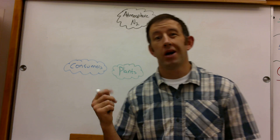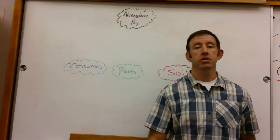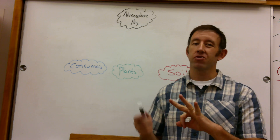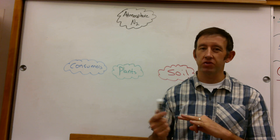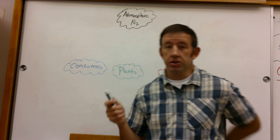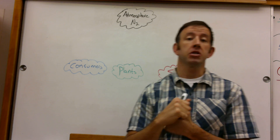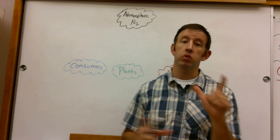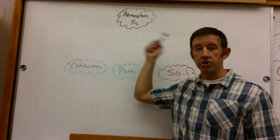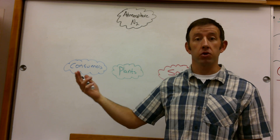Welcome back. So part two of our five-part discussion on biogeochemical cycles. The second big one — the remaining three, the hydrologic, sulfur, and phosphorus cycles, are a little bit smaller and we can do all those in one video. But this one is going to be the nitrogen cycle. We just spent time looking at the inputs, outputs, and the various places we find carbon. Now we're going to do a similar exercise with nitrogen, another key part of our biochemicals.